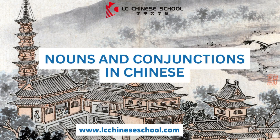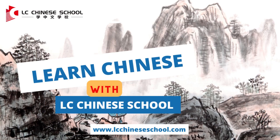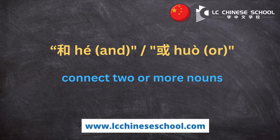Hello everyone. Today we will talk about nouns and conjunctions in Chinese. To connect two or more nouns in Chinese, the conjunction 和 (hé) or can be used.